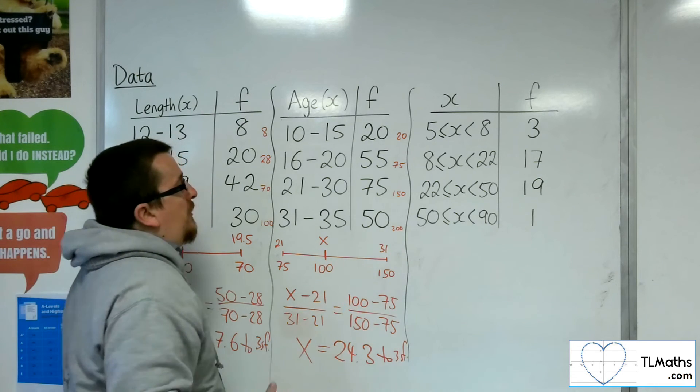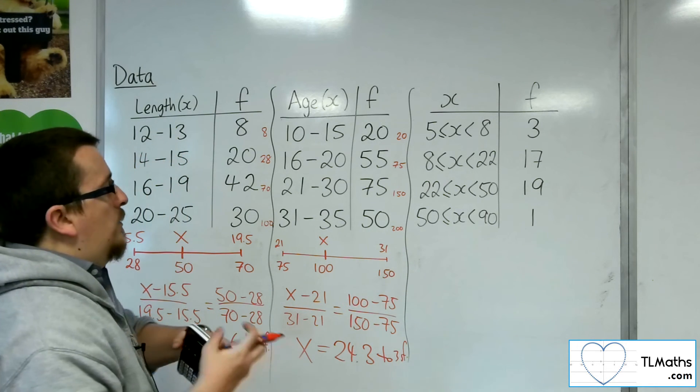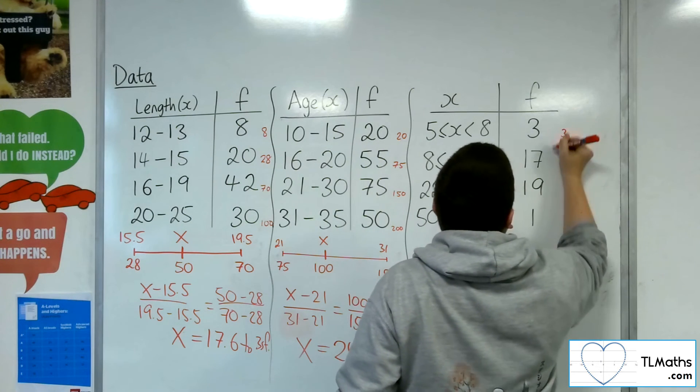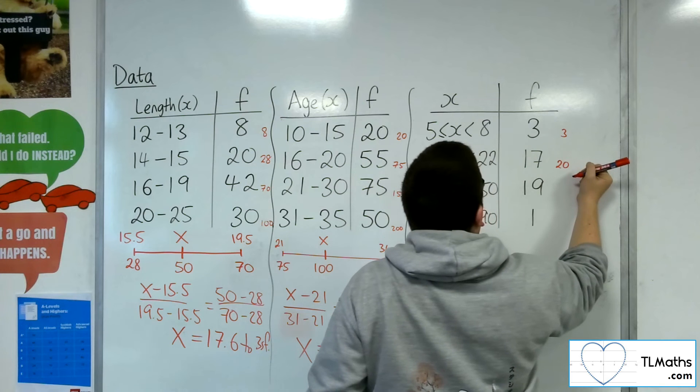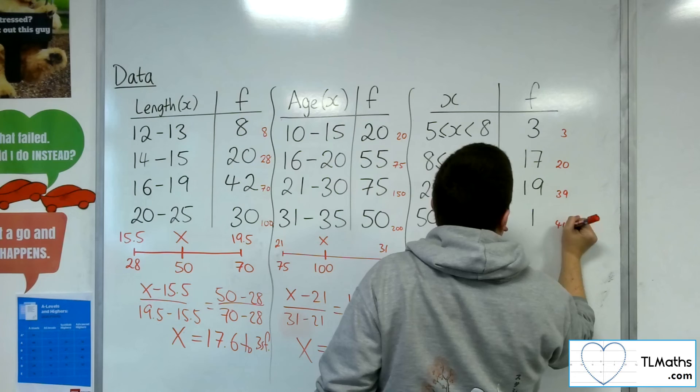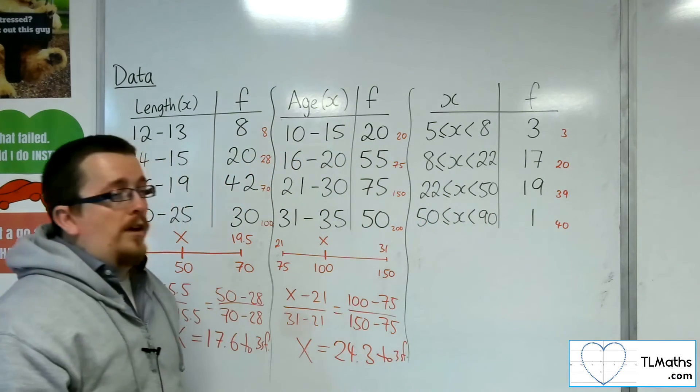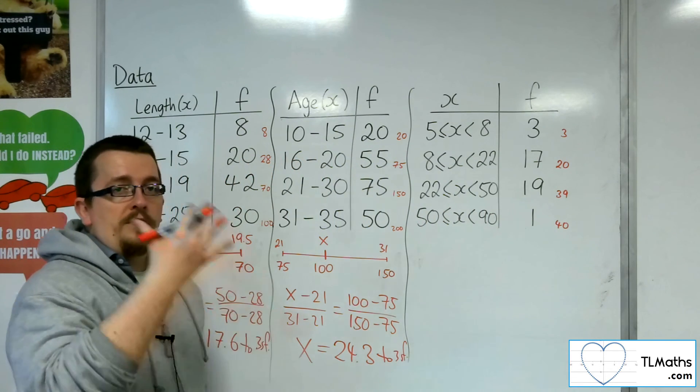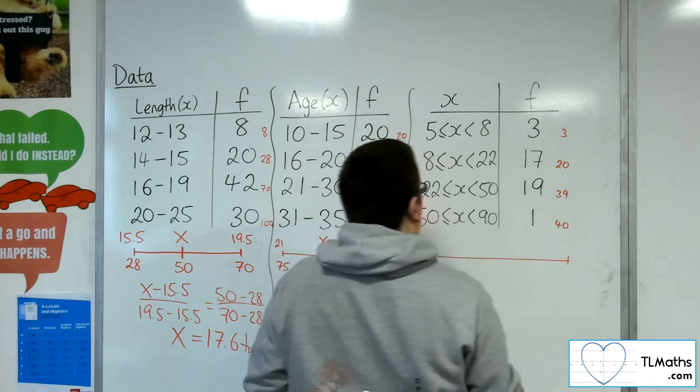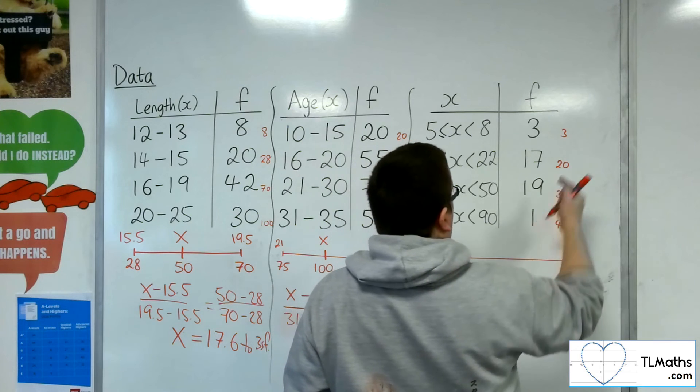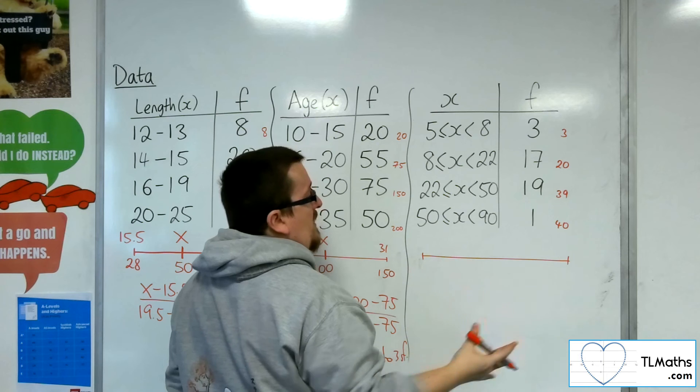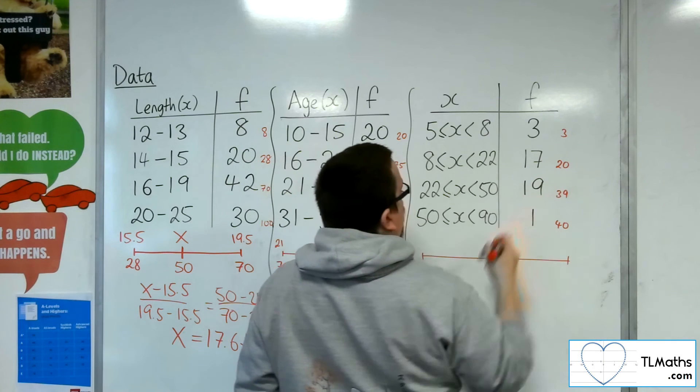For the third example, then we need to find the cumulative frequency first. So, 3, then 20, then add on the 19, so 39, add on the 1, 40. So, we're looking at 40 divided by 2, so the 20th position. So, number line. So, the 20th position in this example is because we've gone through 3 to 17 already, and we've gone through 20, that means that actually my estimate for the median will be precisely at 22.